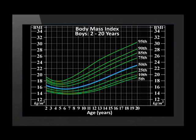A BMI which is above the 95th percentile would be considered obese. For example, an 8-year-old boy with a BMI of 22 is above the 95th percentile and the child is considered to be obese.